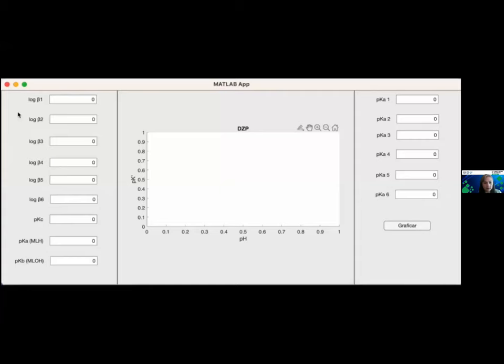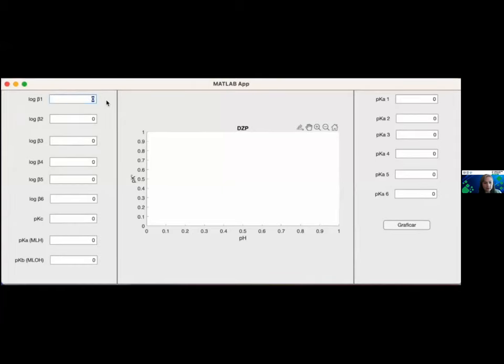Para ver el funcionamiento del programa vamos a dar un ejemplo con cobre y el ácido etilindiamino tetracético o EDTA. Comenzamos colocando el valor del log de beta 1, que es el cobre con hidróxido, que es 6. A continuación colocamos el PKC, que es metal con el ligante, cobre con EDTA 18.8 y la formación del complejo MLH y el complejo MLOH. Una vez alimentados estos datos, podemos presionar graficar para obtener el diagrama correspondiente.